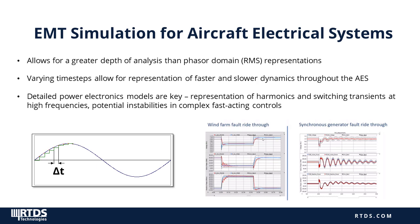In today's demo, you'll see an EMT — electromagnetic transient — simulation of the aircraft electrical system. The output of an EMT simulation is a time-varying instantaneous value; the simulation output resembles the voltage or current waveform as if measured with a scope. The frequency bandwidth that can be accurately represented is determined by the simulation time step, or delta-t. Typically that's between 25 and 50 microseconds, but it can be as small as 1 to 3 microseconds for power electronic circuits. This type of simulation allows for representation of phenomena over a wide frequency range and can capture fast transients in the power system.